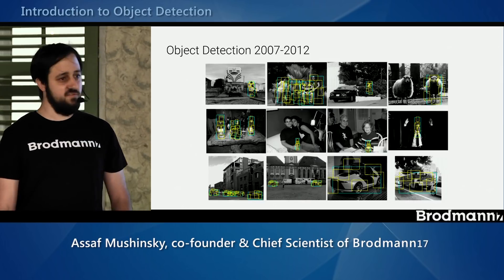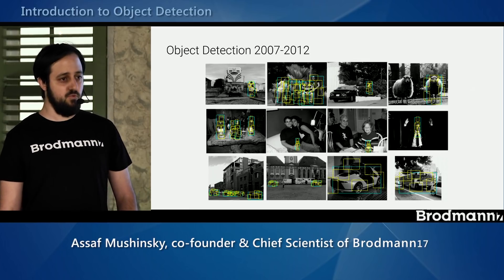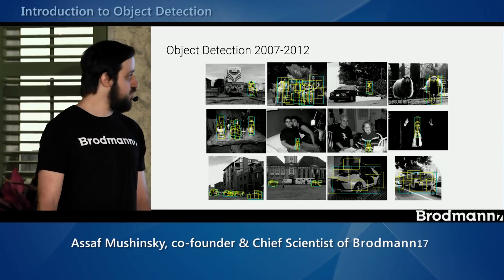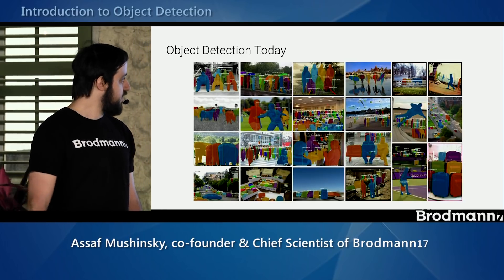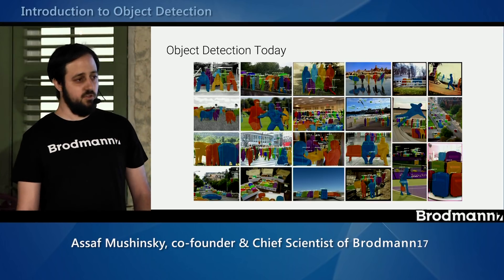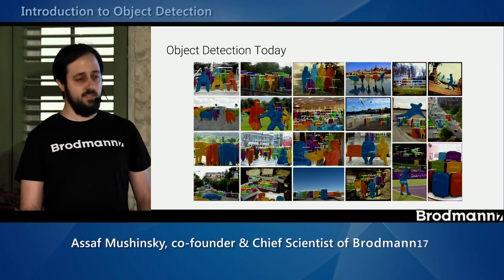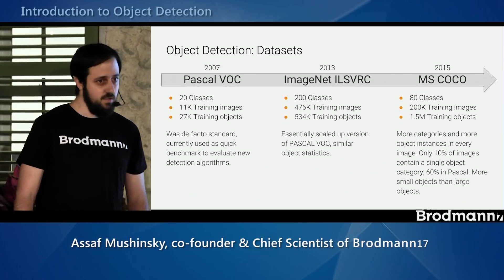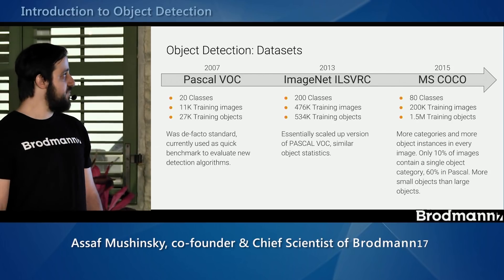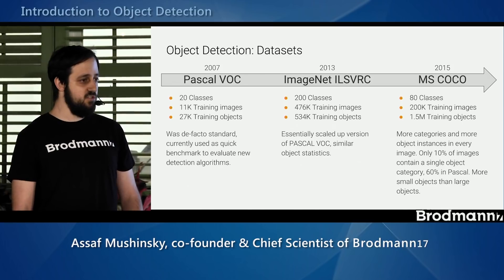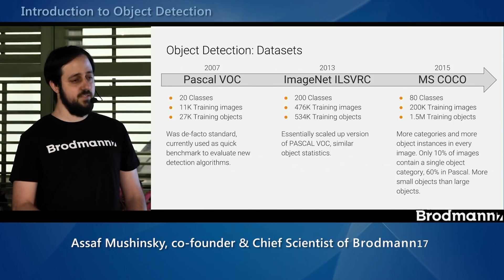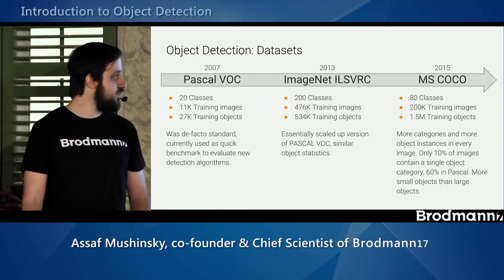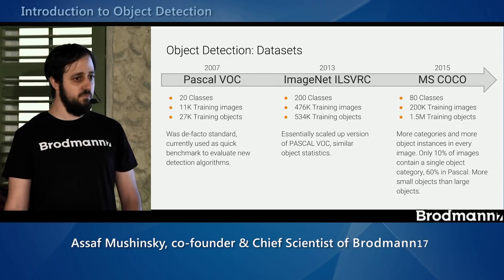From 2007 to 2012, people were taking DPM, replacing features with more expensive and complex classifiers, but ending up with the same thing — accuracy pretty much stagnated. Then there was a big leap: now we can recognize many more objects, more accurately, with more difficult objects, and we can actually segment them. Along this path, datasets also improved in difficulty, starting from Pascal in 2007 with a few relatively large object classes, to COCO in 2015 with many more classes, much more data, and much more challenging images.